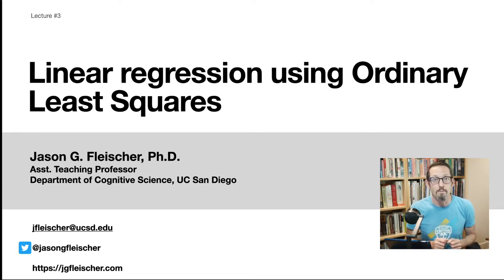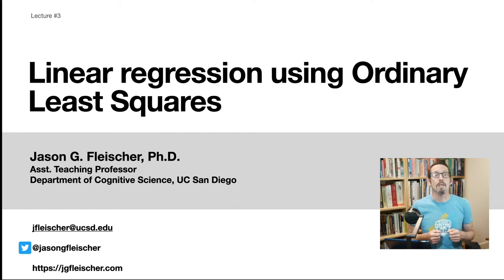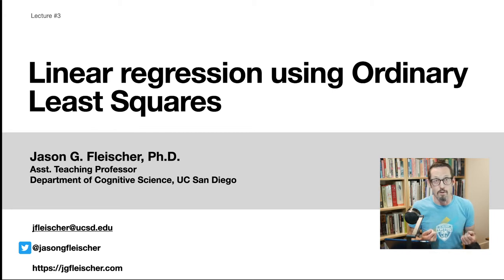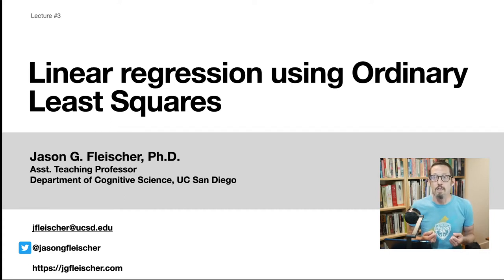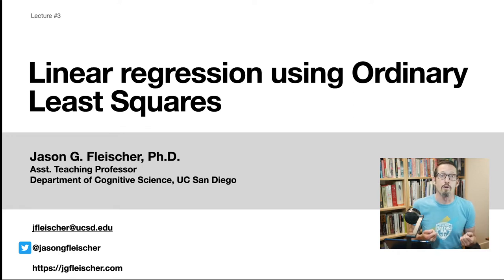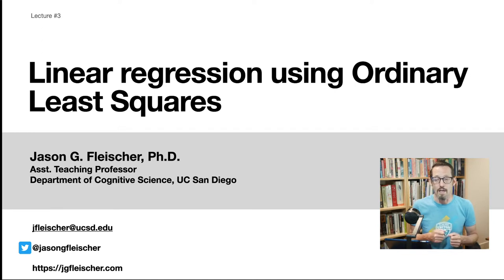The title slide reminds me that what we're doing is not just linear regression, but we're doing it in, as we say, the standard way. There are multiple algorithms you can use to do linear regression, but we're going to highlight ordinary least squares. Ordinary least squares is a really cool method because it is closed form — you can solve for the right answer without having to do anything iterative or random guessing.